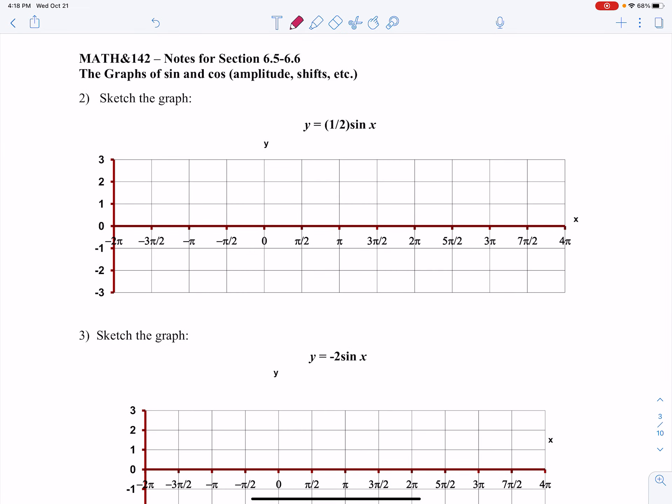y equals 1 half sine of x. Now, again, regular sine of x, if you want to call it that, regular sine of x peaked out at 1. Now, if I multiply it by a half, I'm only going to peak out at a half. So that means I'm going to be there.